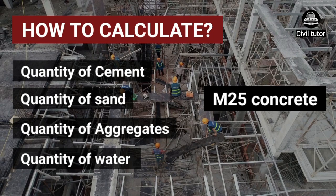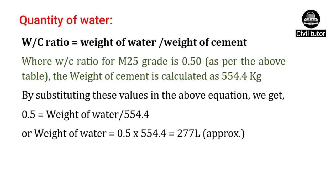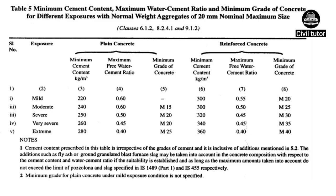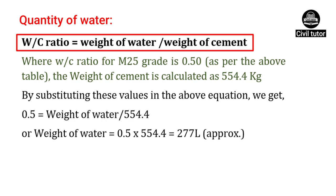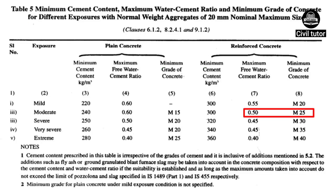Now, coming to the main topic: to calculate the quantity of water, we need to know the water-cement ratio for M25 grade of concrete. As per IS456-2000, the water-cement ratio varies between 0.4 to 0.6 depending upon the exposure conditions and the type of concrete mix. I have extracted a table from IS456-2000 to give a clear explanation of the various water-cement ratios for different concrete mixtures under different exposure conditions.